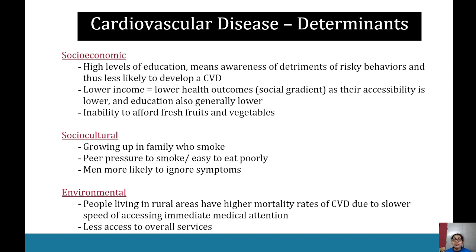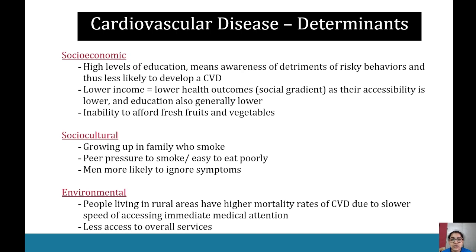For social-cultural determinants: growing up in a family where people smoke can lead to adopting that habit, which links to CVD as smoking is a risk factor. There's also peer pressure to smoke, and it's easy to eat poorly in a world where junk food is glorified in advertising and technology. Men are more likely to ignore symptoms. For environmental determinants, people living in rural areas have higher mortality rates from CVD due to slower access to immediate medical attention and less access to overall health services.